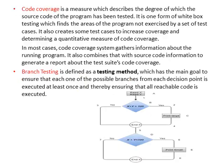Code coverage describes the degree to which the source code of a program has been tested. It creates test cases to increase coverage and determines a quantitative measure of code coverage. Branch testing defines a testing method whose main goal is to ensure that each possible branch from each decision point is executed at least once, thereby ensuring that all reachable code is executed.